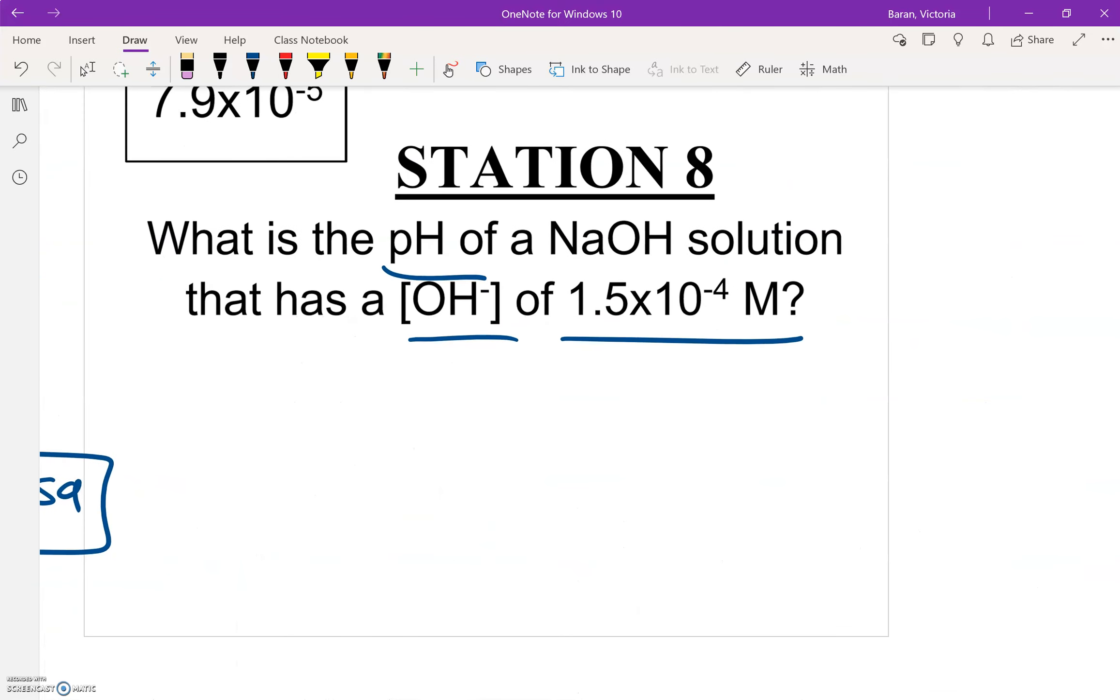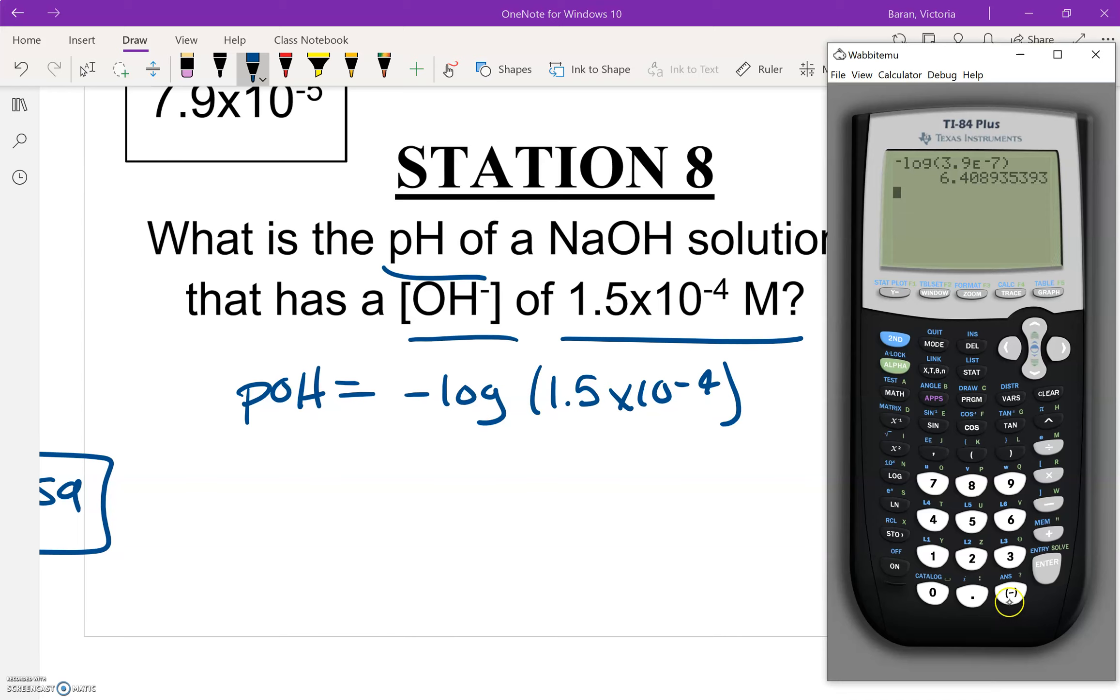So I'm going to find the pOH, which is equal to the negative log of the OH minus concentration, which they told me is 1.5×10⁻⁴. So I'm going to do negative, not minus, log 1.5. We're going to use that E, so hit the second blue button, that comma, and then negative 4, and then close parentheses. So we're going to get 3.82.